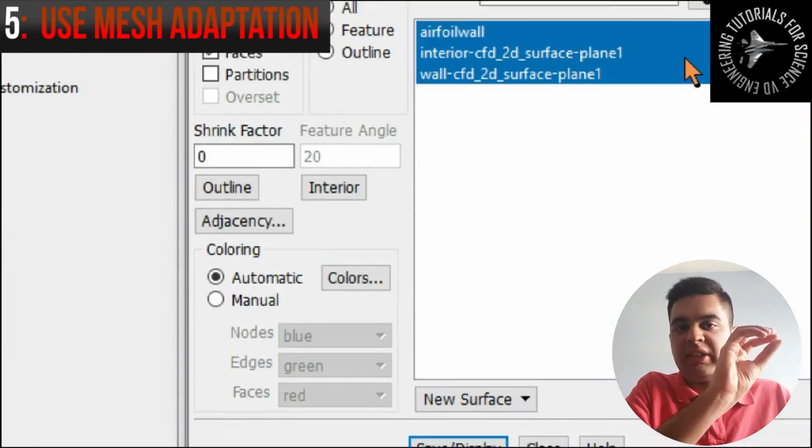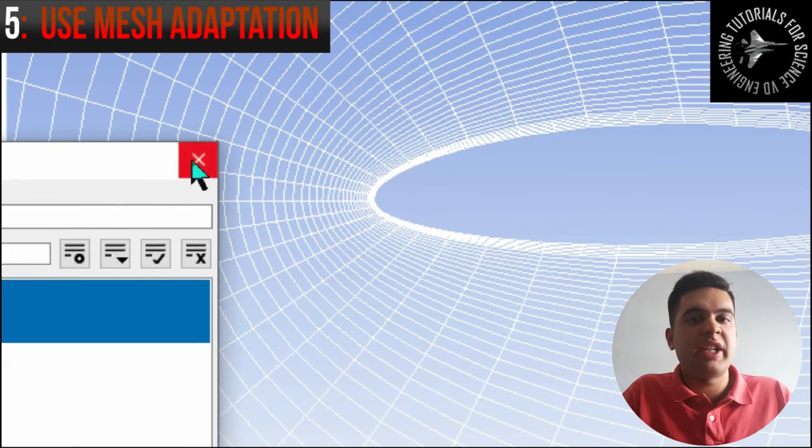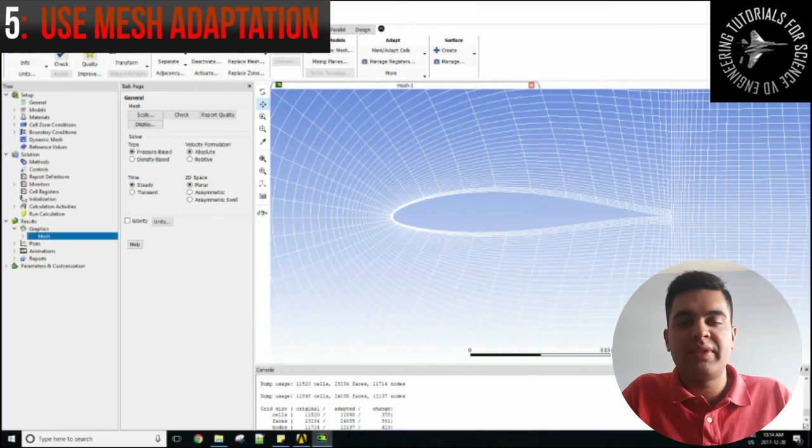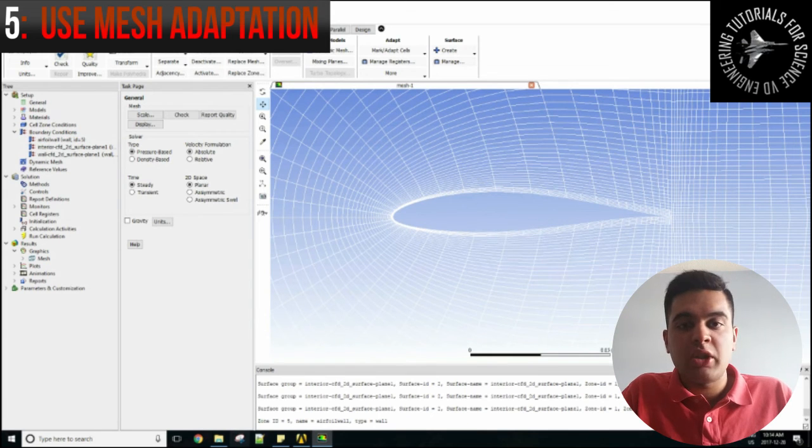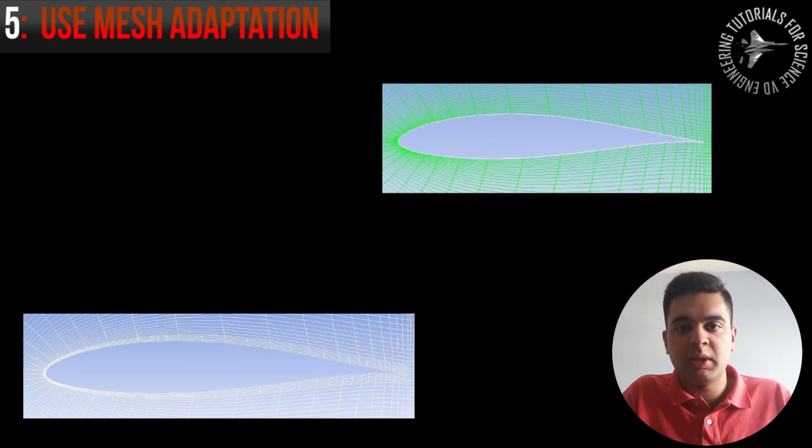What that does is it creates a thinner boundary layer and it lets you define a more accurate mesh. And I have an example over here showing how it looks. So the adapt boundary feature is quite a helpful tool to get better and more accurate results from your turbulent computational fluid dynamics simulations.